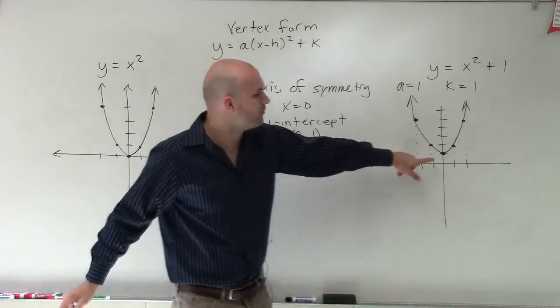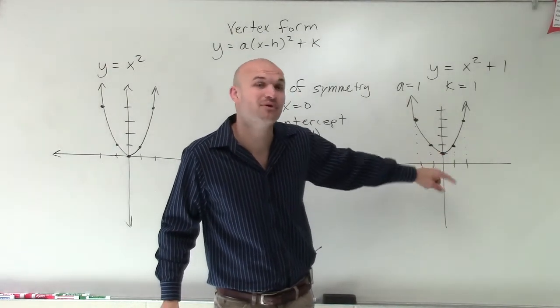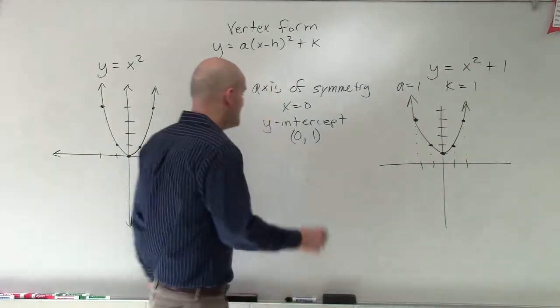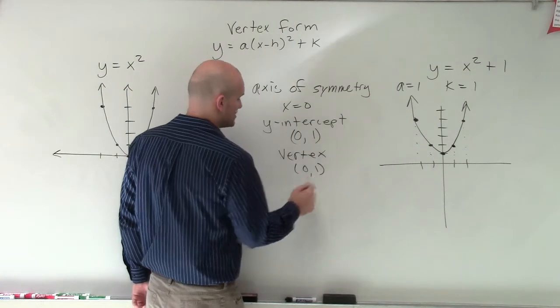And at that y-intercept, you also notice that that is also the exact same point where my minimum point is on my graph. So that's going to be our vertex. So our vertex is also going to occur at 0, 1.